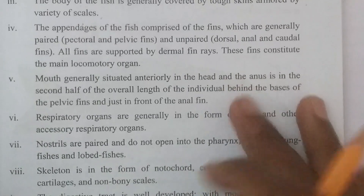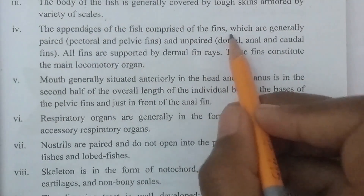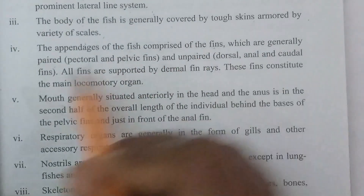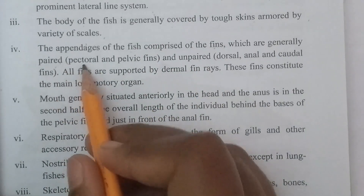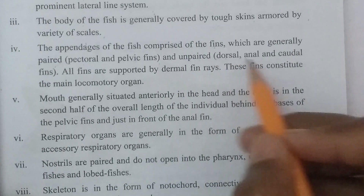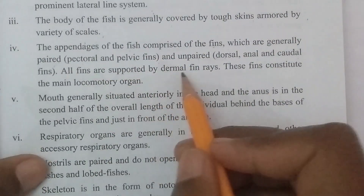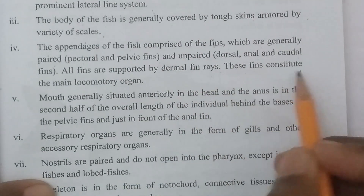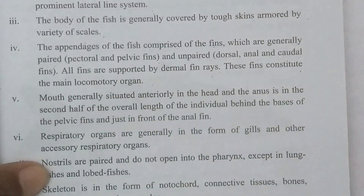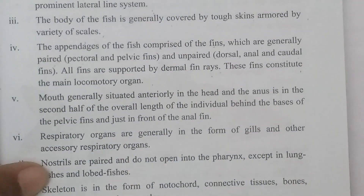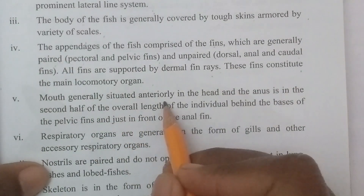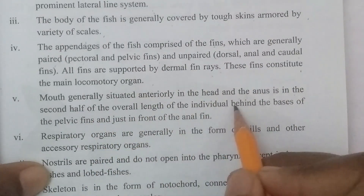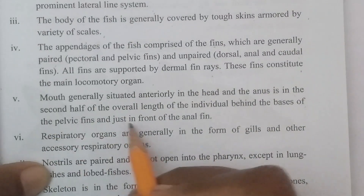The body of fish is generally covered by tough skin armored by a variety of scales. The appendages of fish are comprised of fins, which are either paired — such as pectoral or pelvic fins — or unpaired — such as dorsal, anal, or caudal fins. All fins are supported by dermal fin rays and constitute the main locomotory organ. The mouth is generally situated anteriorly in the head, and the anus is in the second half of the overall body length, behind the bases of the pelvic fins and just in front of the anal fin.